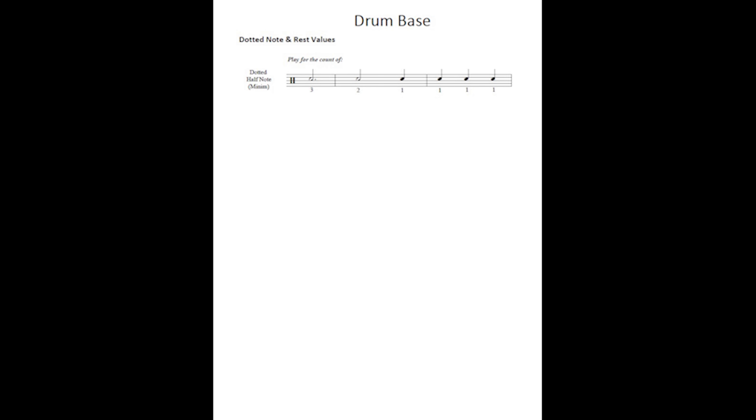Let's have a look at the sheet. What we've got here is your half note. A dotted half note is worth a half note plus a quarter note — a half note is two beats, a quarter note is one beat — so it is worth a half note and a quarter, or you can think of it as three quarter notes, which is three beats. That's how much a dotted half note is worth.